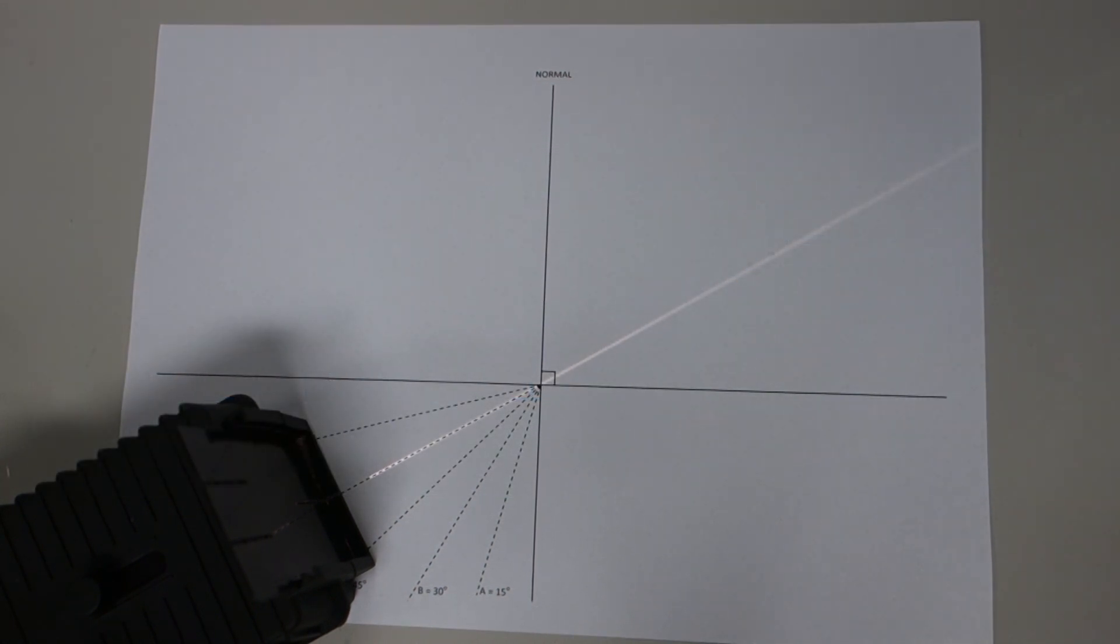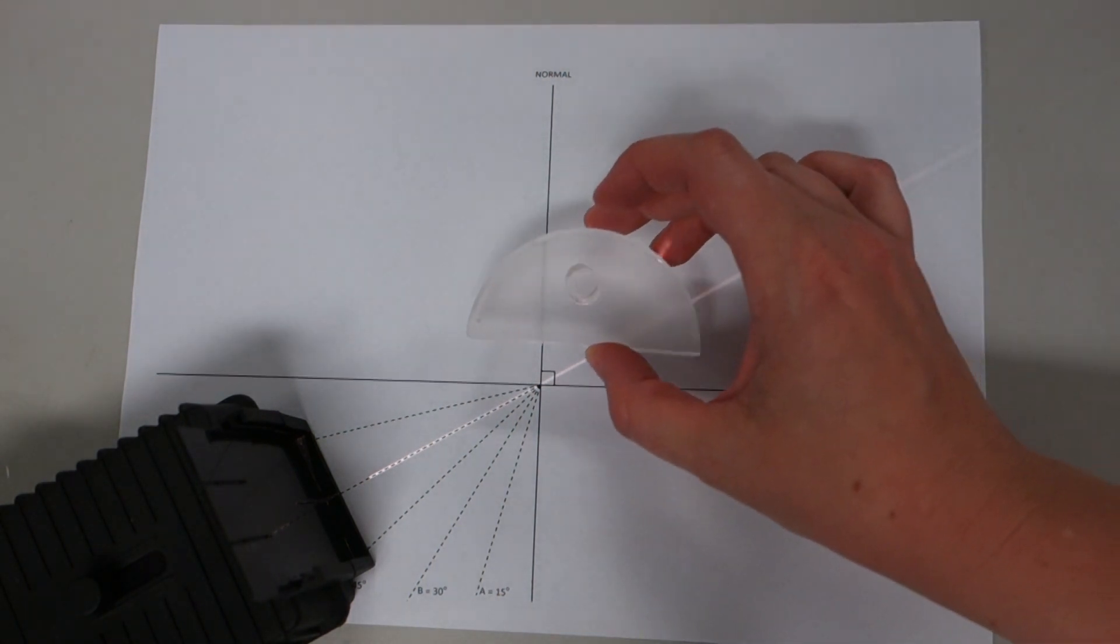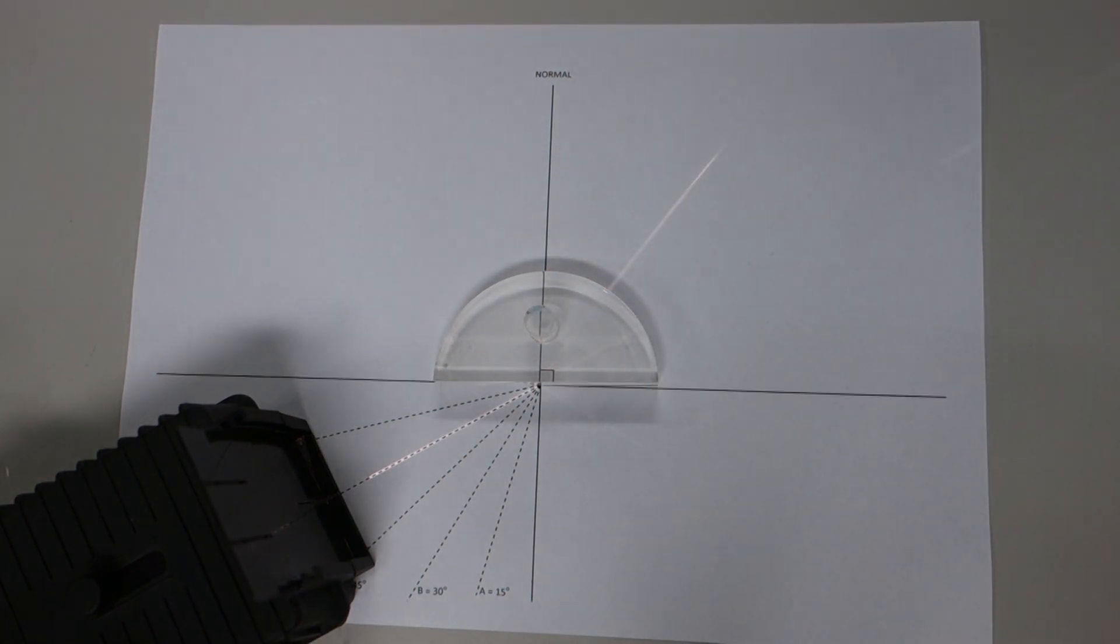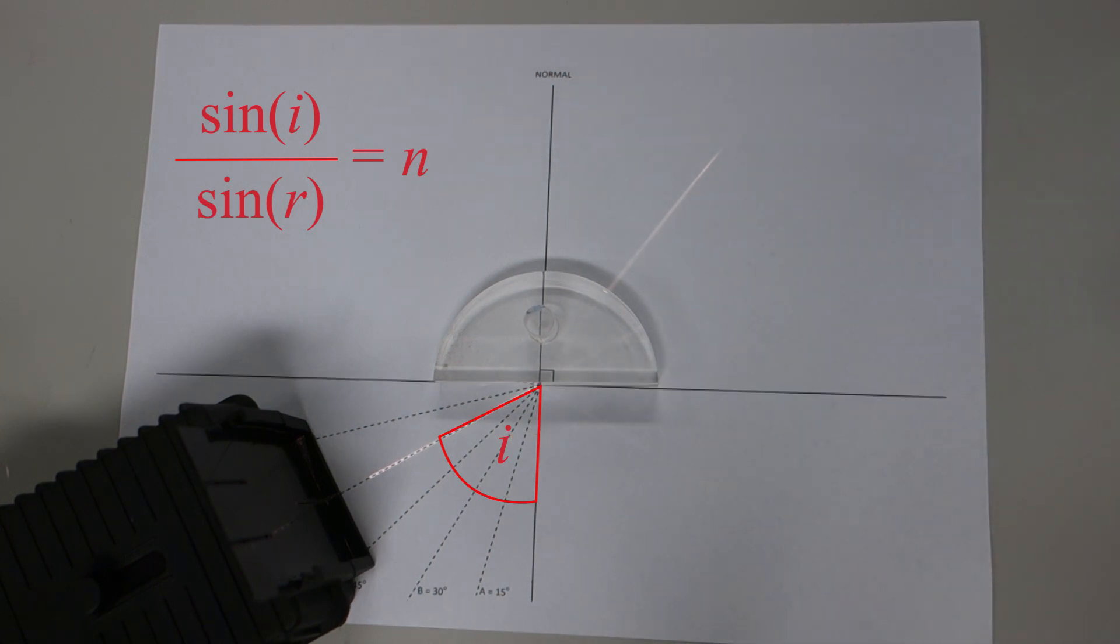You may have already done an exercise in class where you investigated the refractive index of a solid semi-circular block of perspex. You should have found that the ratio between the sine of the angle of incidence, that's this angle here, and the sine of the angle of refraction, that's this angle here, remains constant.